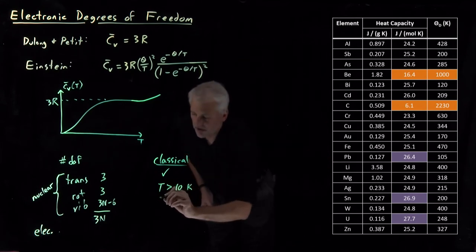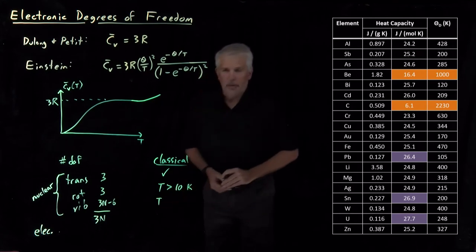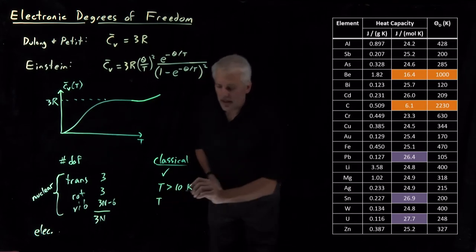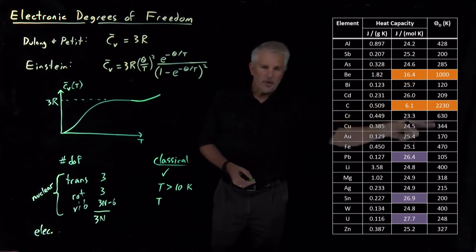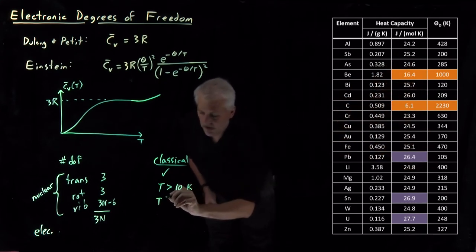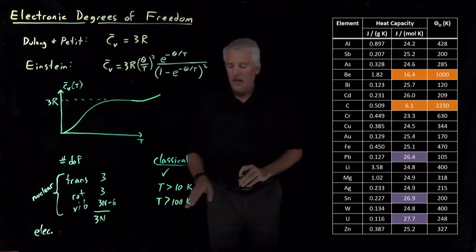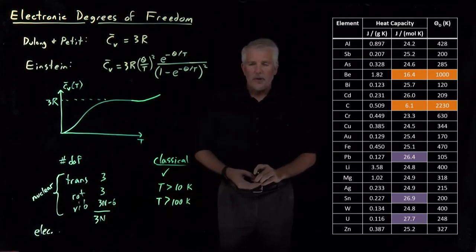The vibrational temperature in diatomic molecules was thousands of Kelvin, but in these solids, as we've seen, the vibrational temperature tends to be on the vicinity of a few hundred Kelvin. So as long as we're bigger than a few hundred Kelvin, the vibrations get treated classically.